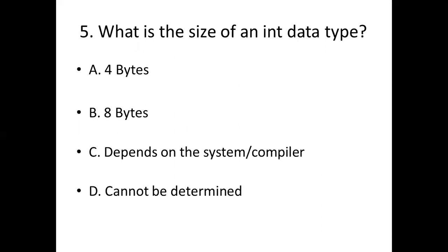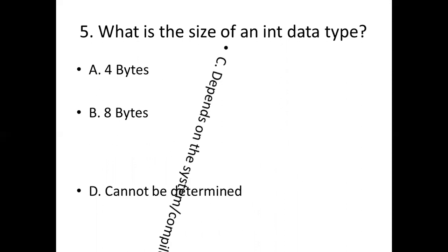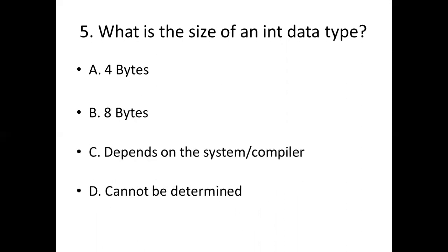Fifth bit: What is the size of an int data type? Option A: 4 bytes. Option B: 8 bytes. Option C: depends on the system or compiler. Option D: cannot be determined. Answer: Option C, depends on the system or compiler.